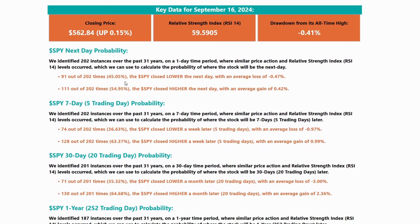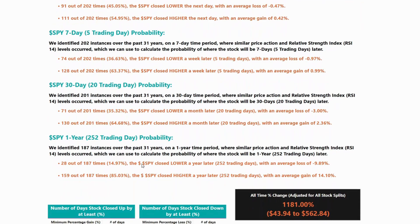Now looking at the next-day probability, this may not look like much because it's 45 versus 55% for the upside. But when you look at this on a one-year timeline — if you jump down to SPY for one-year probability — you start seeing a much different picture. So 159 out of 187 times, or 85.03% of the time, SPY closed higher a year later with an average gain of 14.10%, versus 28 out of 187 times, or 14.97% of the time, SPY closed lower a year later.